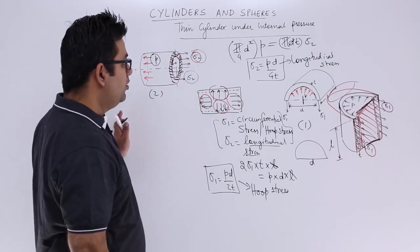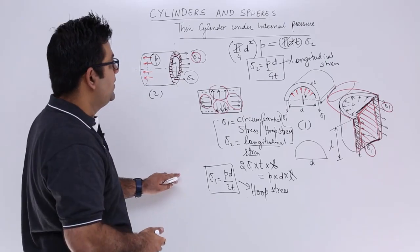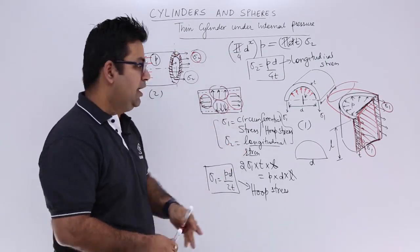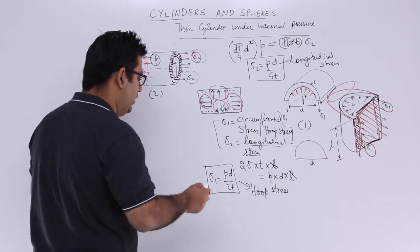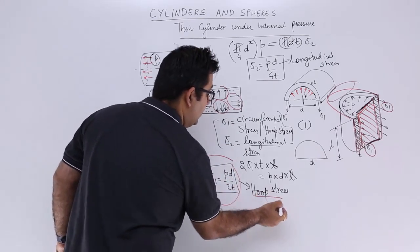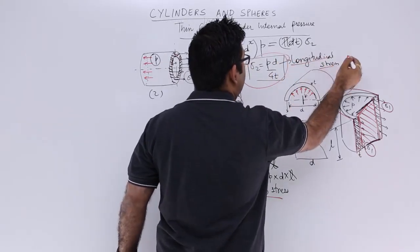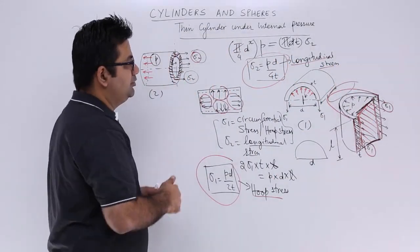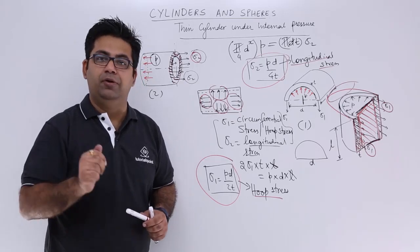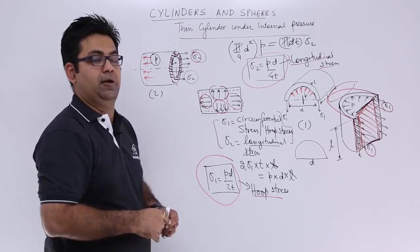This is how you calculate the two stresses in a thin cylinder under internal pressure. The important formulas are sigma 1 = pd/2t for hoop stress and sigma 2 = pd/4t for longitudinal stress. Now let's move on to the next video and talk about a sphere instead of a cylinder.